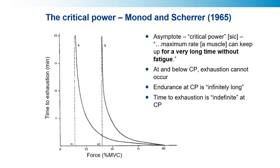This has led to quite a lot of hard inference on this basis. Critics of the critical power concept will tell you that if any of these statements don't hold, then the critical power model is a rubbish model. So if you see a non-infinite endurance time at critical power, then the critical power model is wrong. I don't actually think this is true. I think this is a misreading or misrepresentation of the model itself.